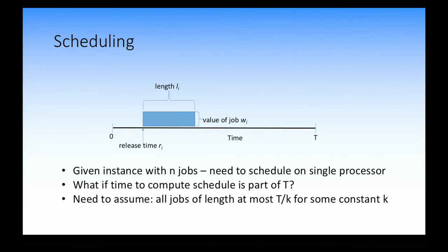Scheduling problem: you're given an instance with n jobs to schedule on one processor, and the time to schedule is part of the time you have. You have a total time t. At time zero you're told what the n jobs are and their various parameters. You decide what the schedule is and then execute it. Each job has a release time r_i, a length l_i, and a value for performing the job — the payoff you get. You can only perform a job after its release. Now what if the compute time to compute the schedule is part of time t? We want to compare our solutions to the offline version, where you could plan your schedule beforehand and use all of time t to execute.